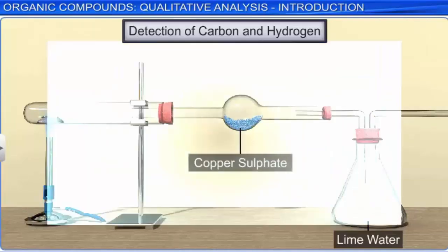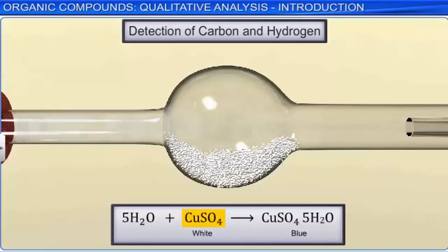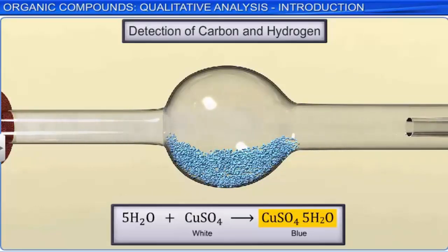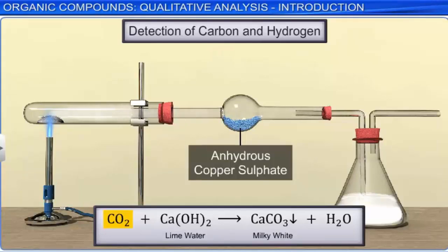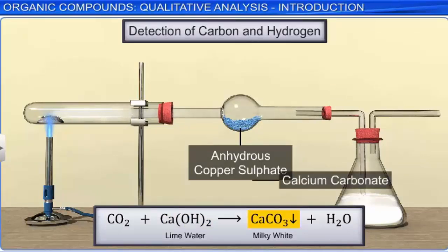Anhydrous copper sulfate absorbs moisture and turns blue due to the formation of hydrated copper sulfate, that is copper sulfate pentahydrate, indicating the presence of hydrogen. When the carbon dioxide formed is passed through lime water, that is calcium hydroxide, a milky white precipitate of calcium carbonate is formed, indicating the presence of carbon in the given compound.